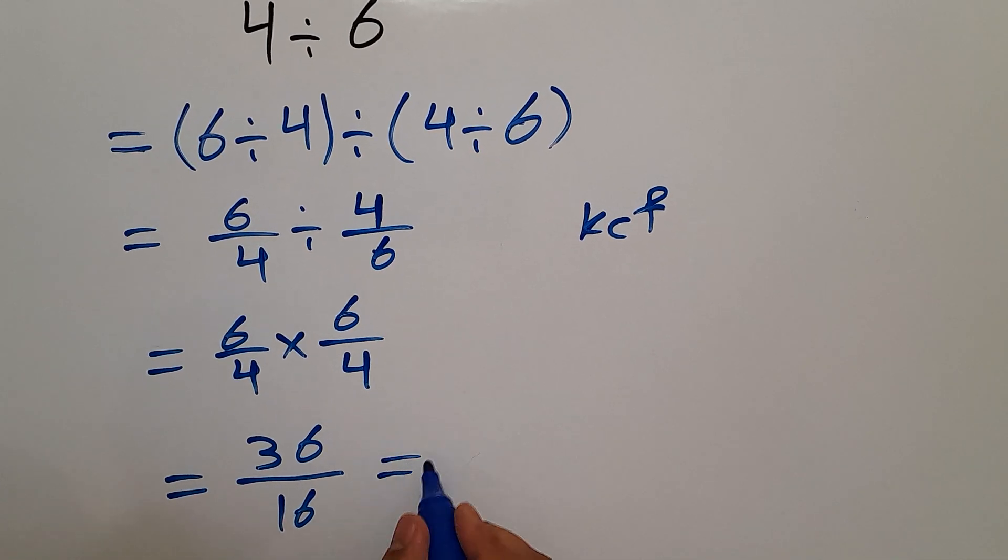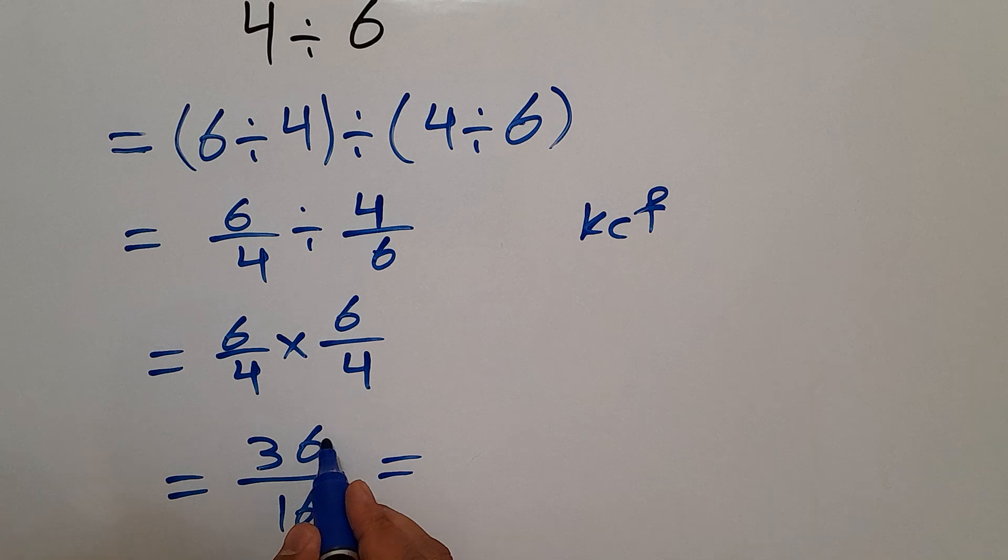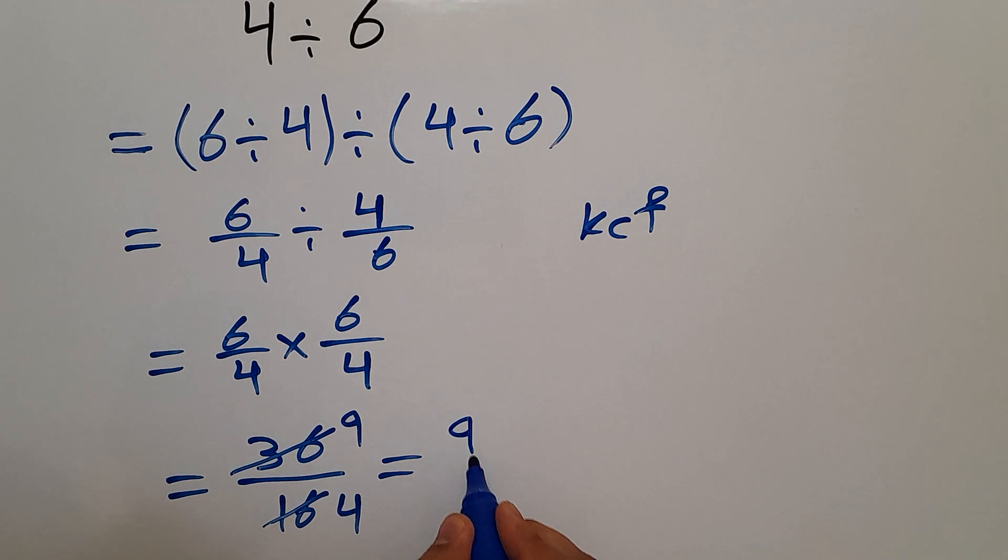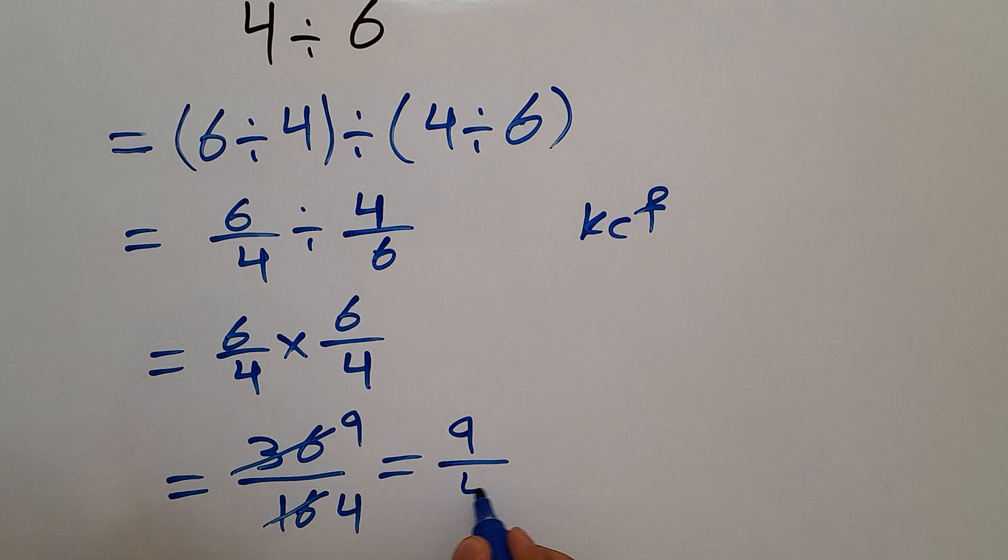And this is equal to 36 divided by 4 gives us 9, and 16 divided by 4 equals 4. So our final answer to this problem is 9 over 4.